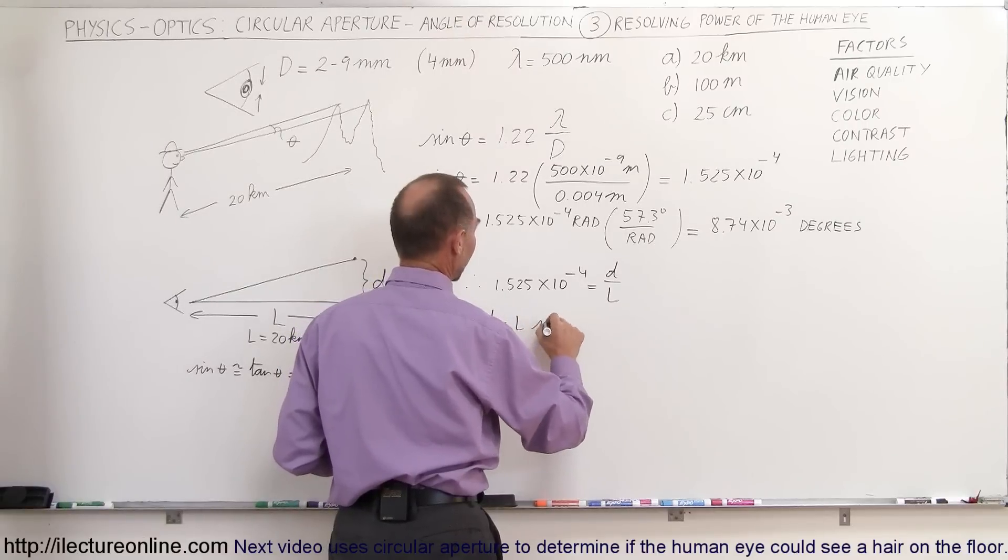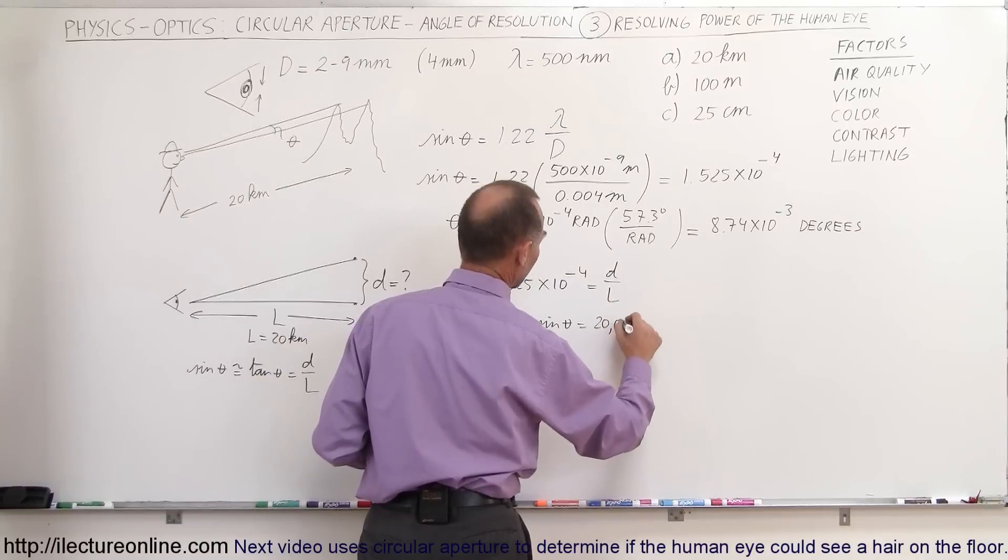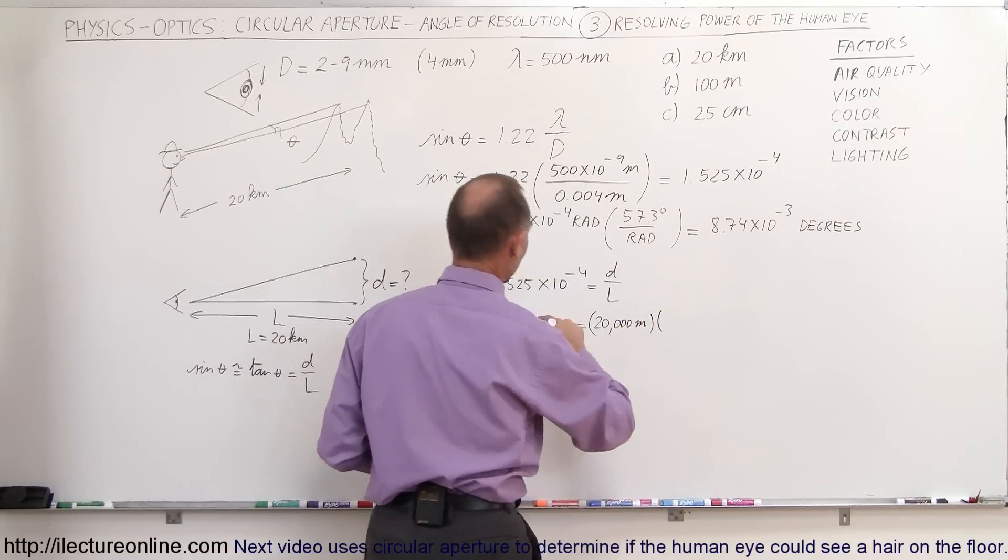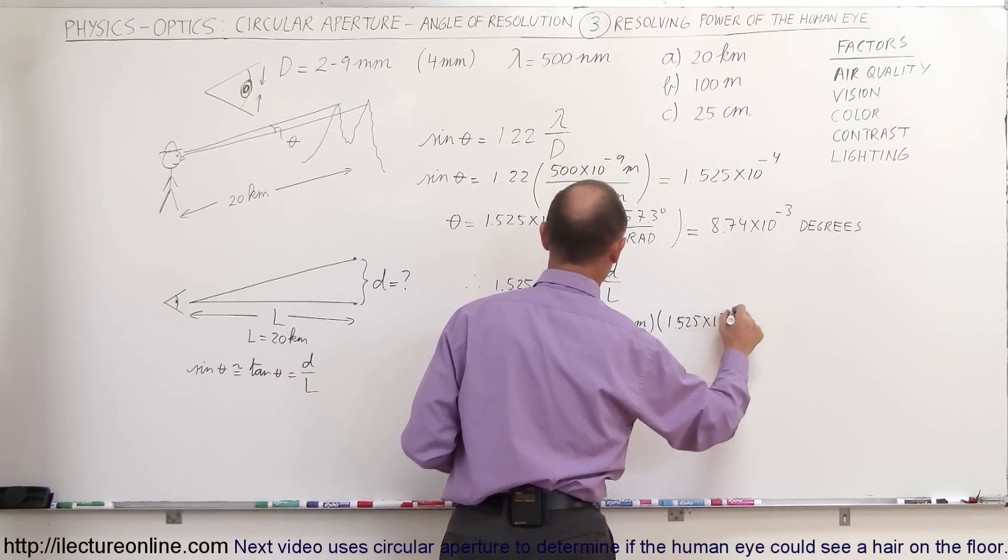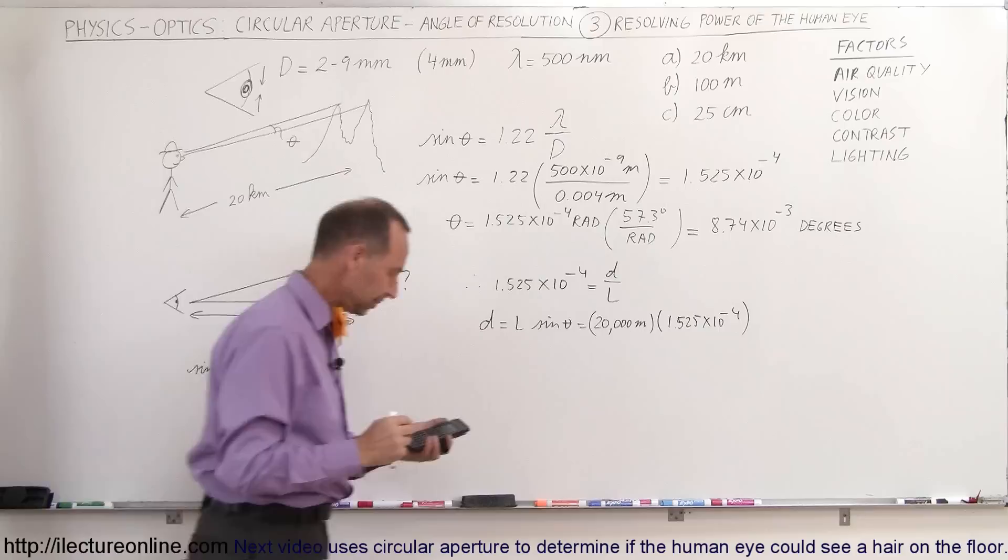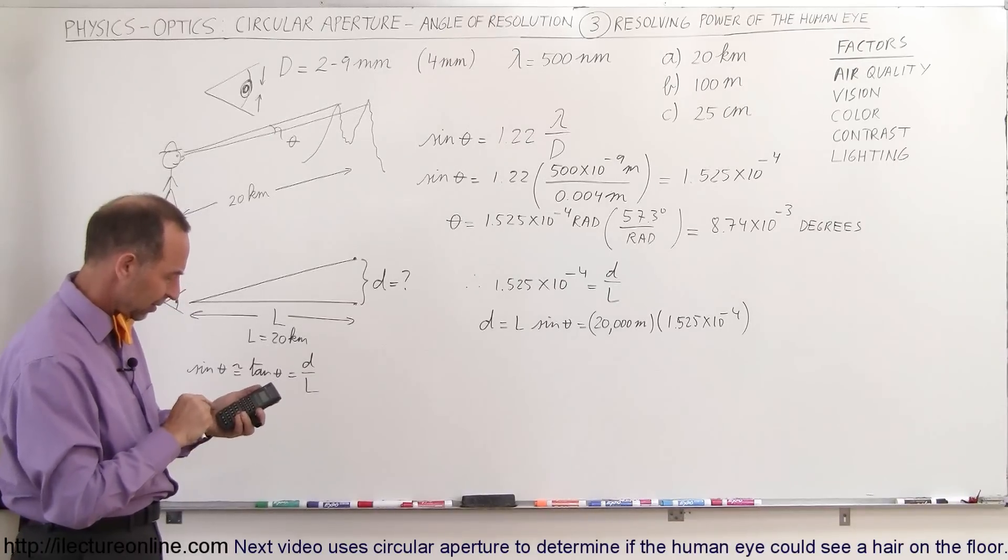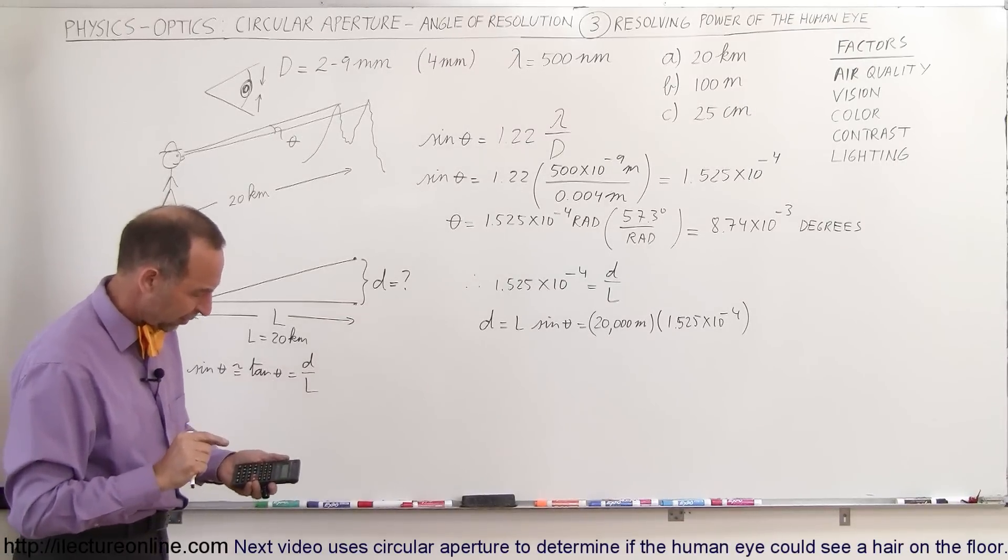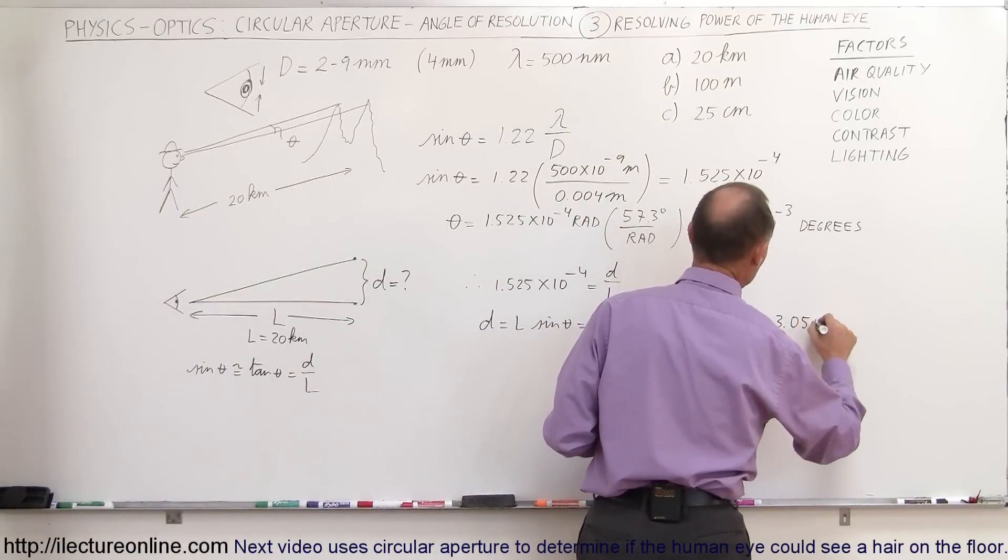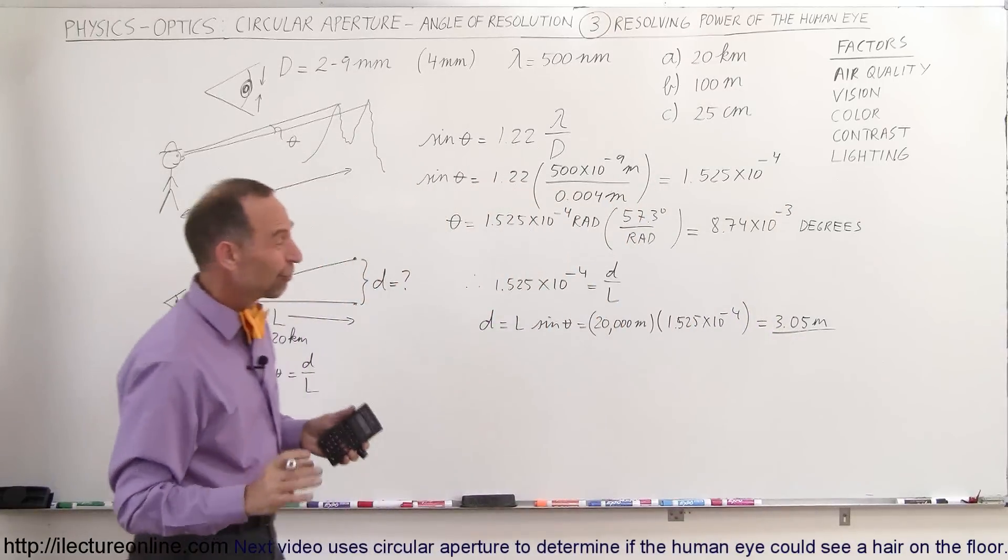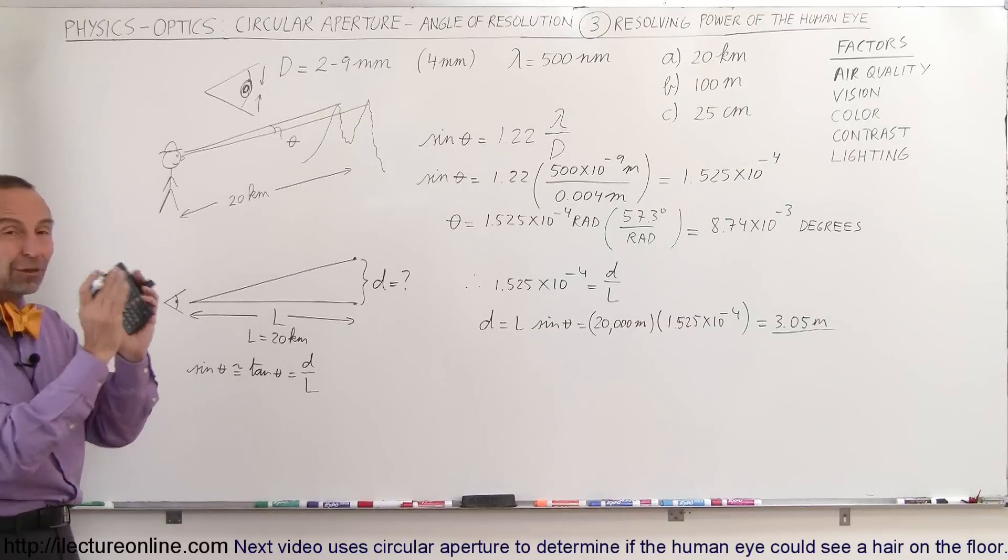D is equal to L times the sine of theta. So therefore, that's equal to 20 kilometers, or 20,000 meters, multiplied by times 1.525 times 10 to the minus 4. So divide by 57.3 times 20,000 equals, and the answer is 3.05 meters. So about 3.05 meters, which means at a distance of 20 kilometers, the human eye is capable of distinguishing two objects 3 meters apart.